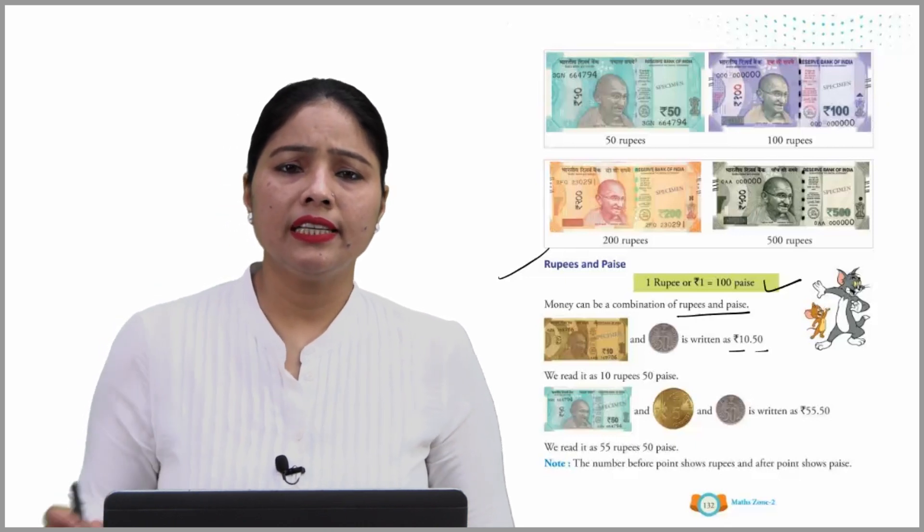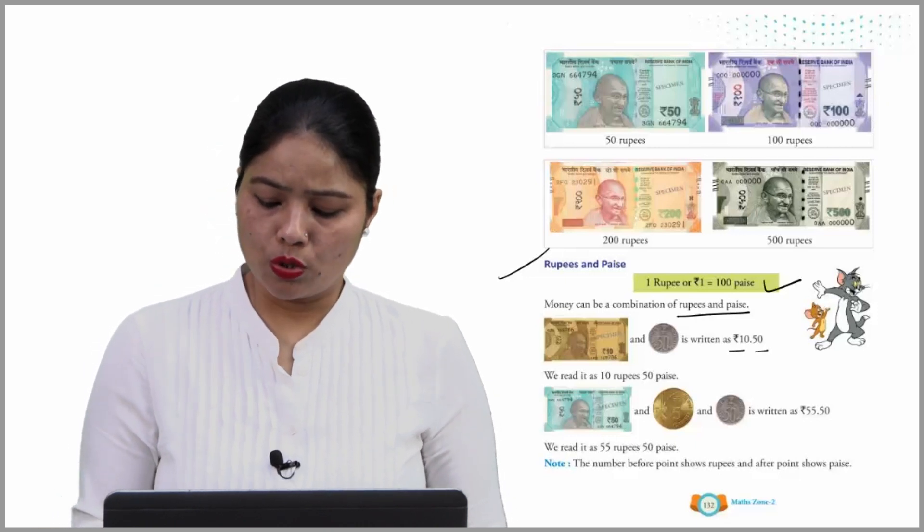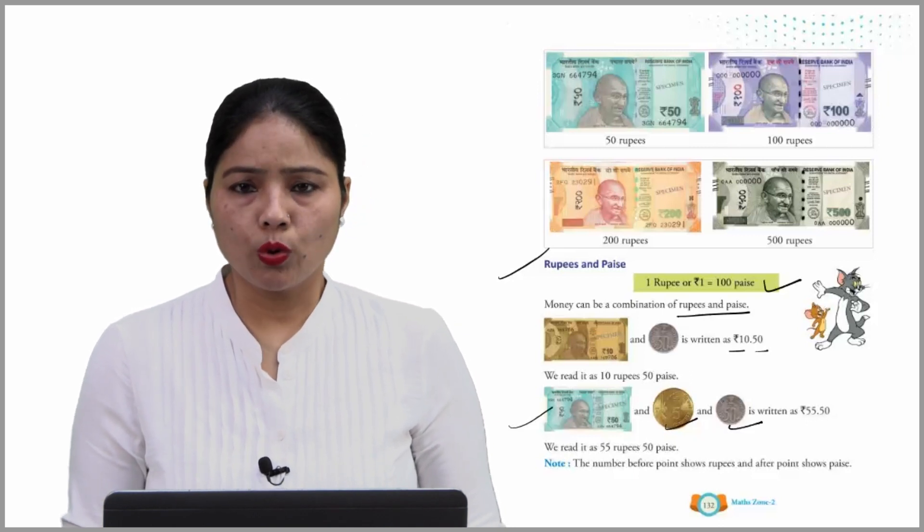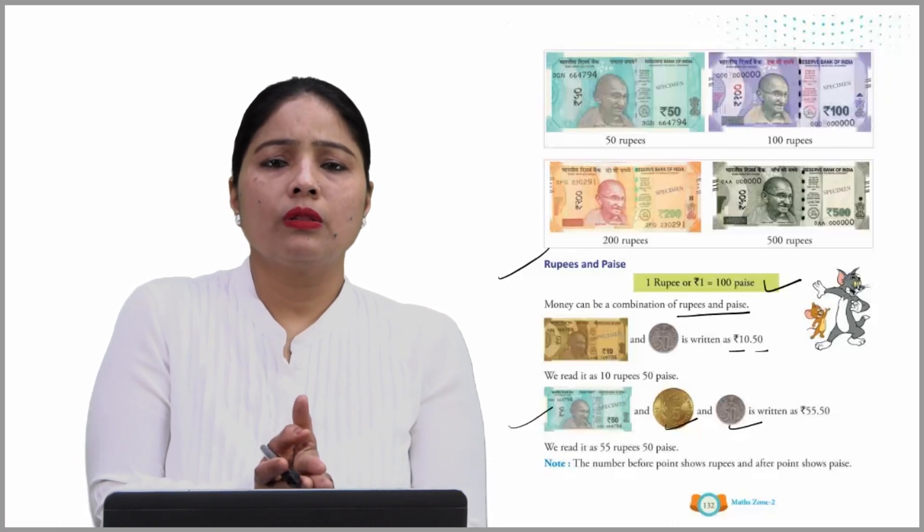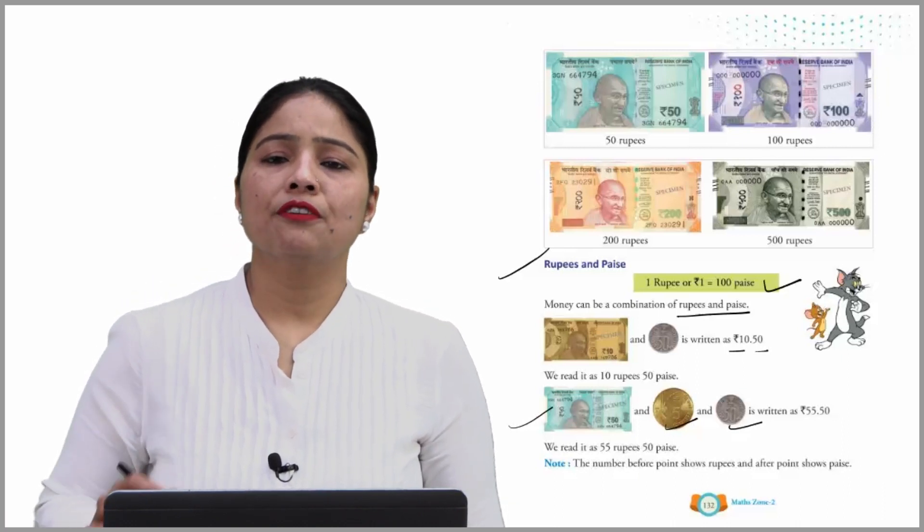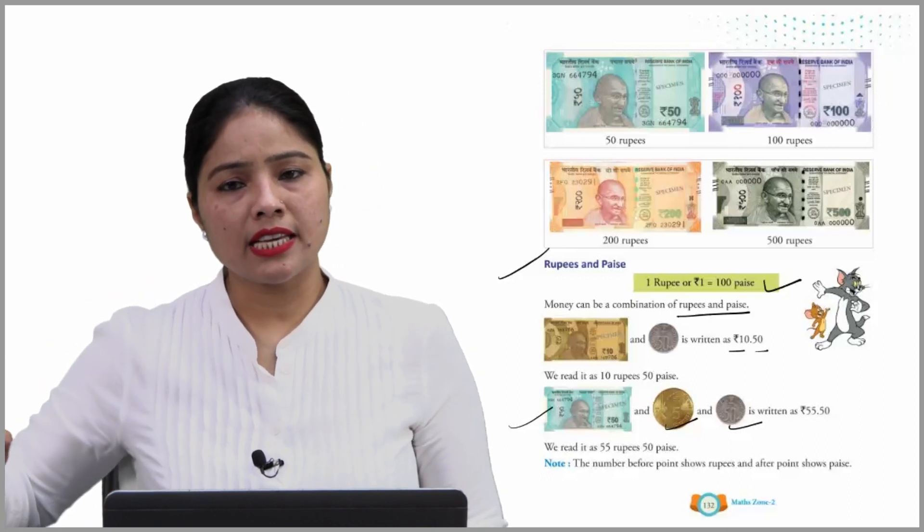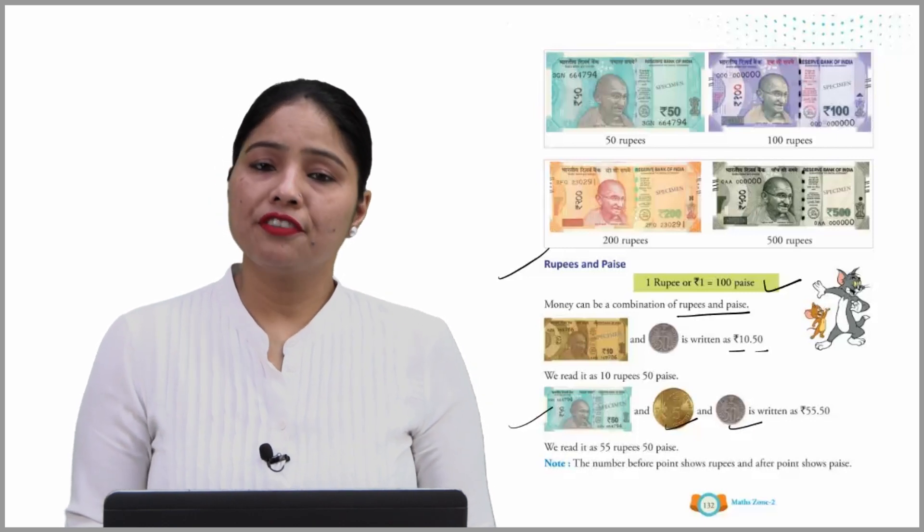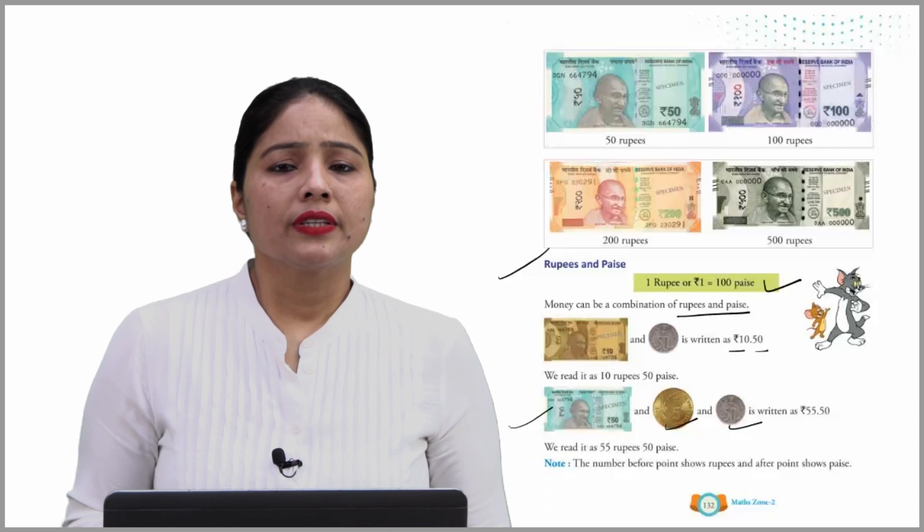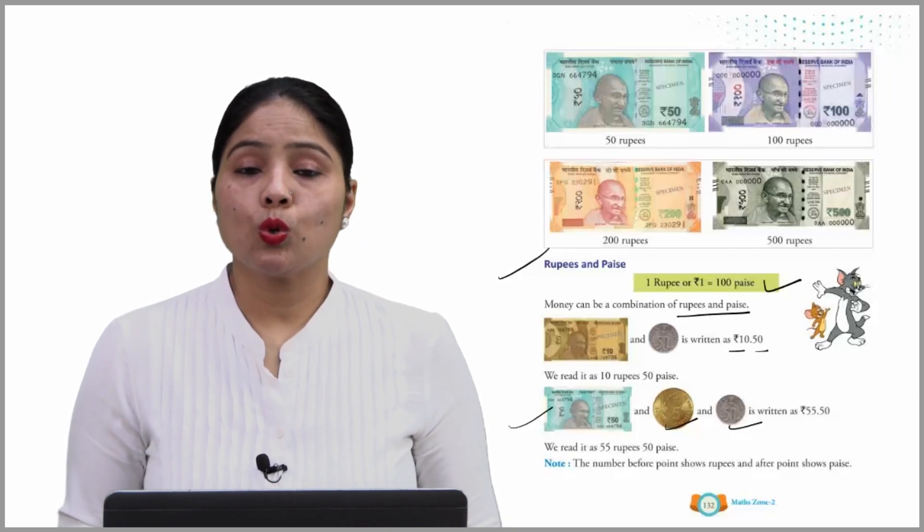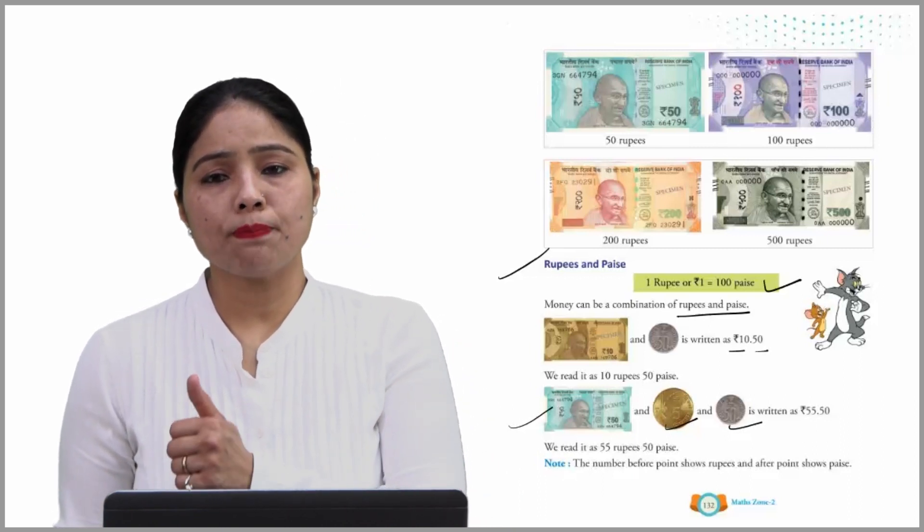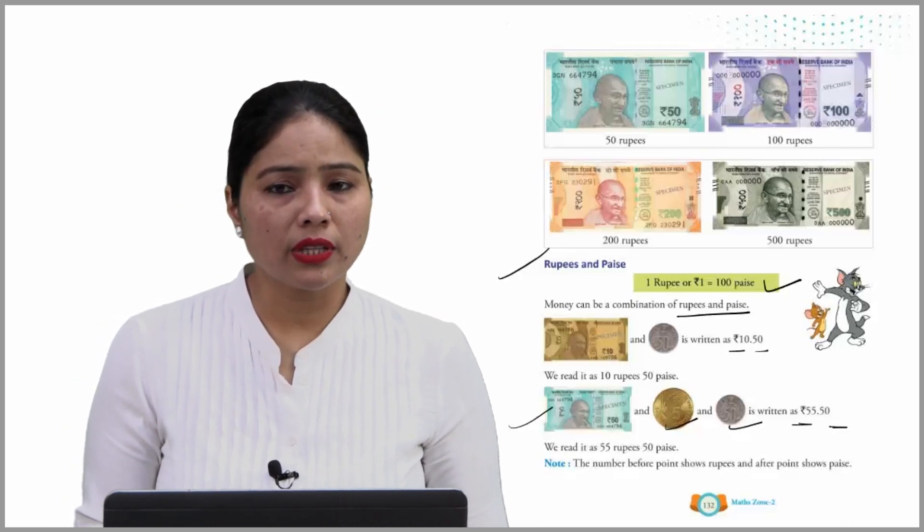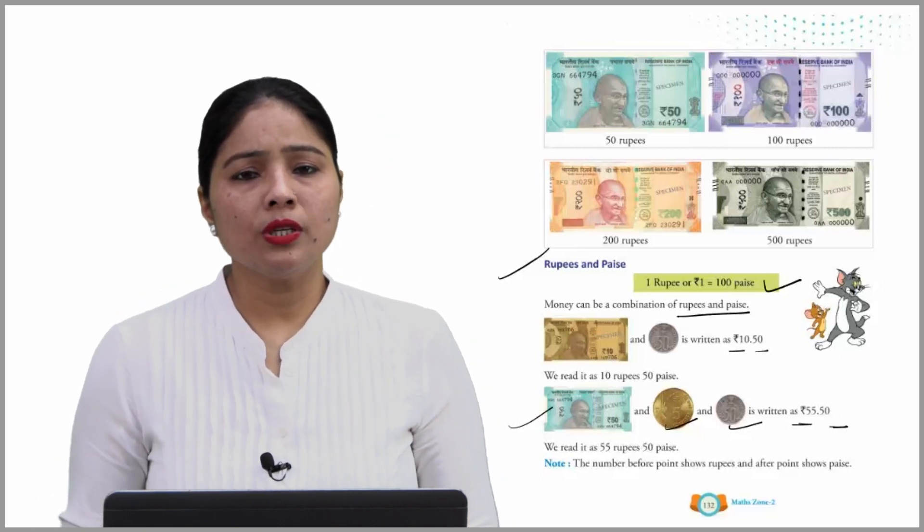This is 50 rupees note, this is 50 rupees coin, this is 50 paise. If you add all the numbers - 50 and 5 makes 55, then paise separately point 50. So we read it as 55 rupees and 50 paise. Note: the number before point shows rupees and after point shows paise.